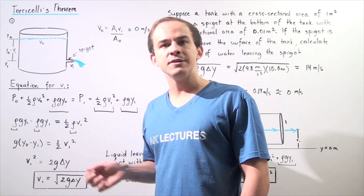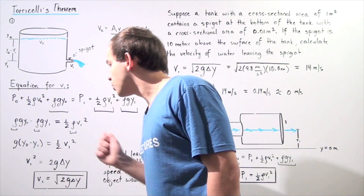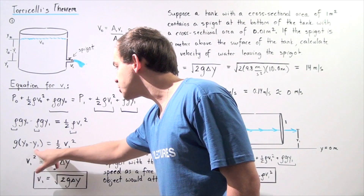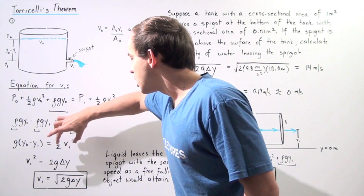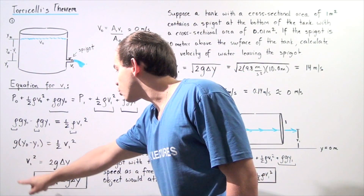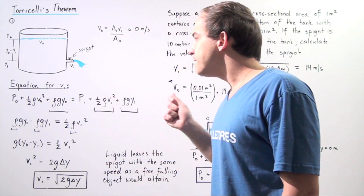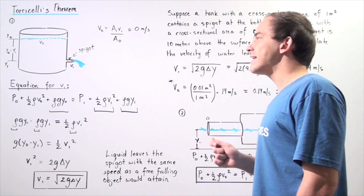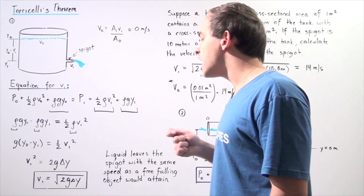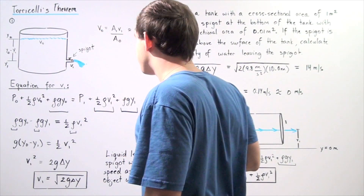We're solving for V1, the velocity of the fluid at the spigot. Rearranging, V1 squared equals 2g times ΔY. Taking the square root of both sides gives us V1 equals the square root of 2 times g times the change in height between the spigot and the surface of the fluid.